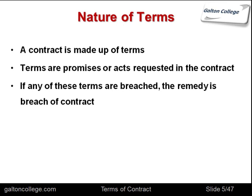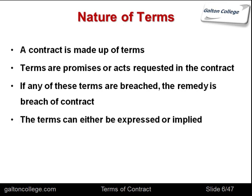If any of the terms are breached, the remedy is breach of contract. So there is an action that can be taken by a claimant upon the other party in the contract for breach of contract if a term is breached, if a term is not adhered to. The terms can be either expressed — written on paper — or implied, understood between the two parties in a way that enables them to have a contract.